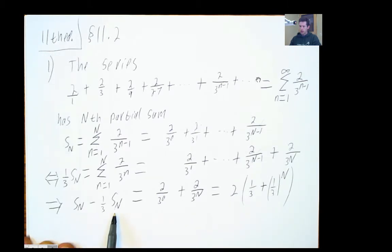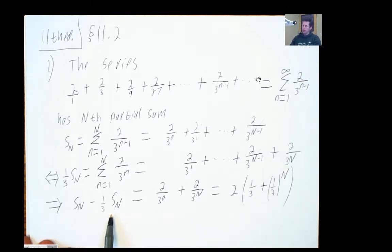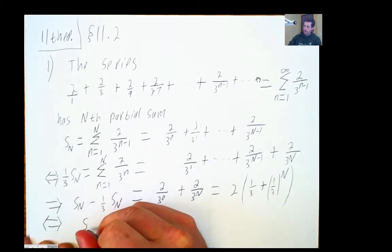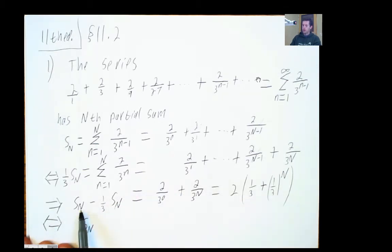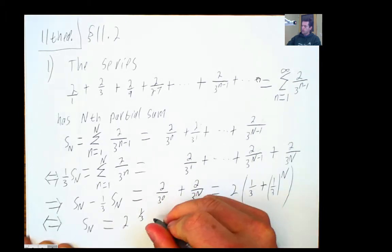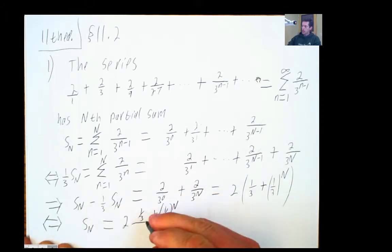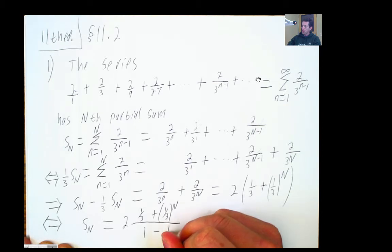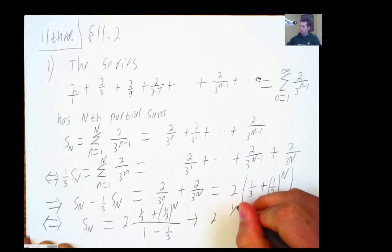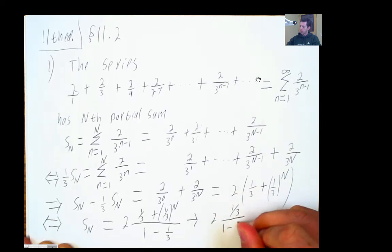So over here, if I wanted to isolate SN, that would mean I factor out SN from both of these, we'll give them the 1 minus 1/3. Divide by that, I'll get 2 times (1/3 plus 1 over 3 to the capital N), divided by 1 minus 1/3. And that, I can say, goes to 2 times 1/3 over 1 minus 1/3, which is 2 times 1/3 over 2/3.